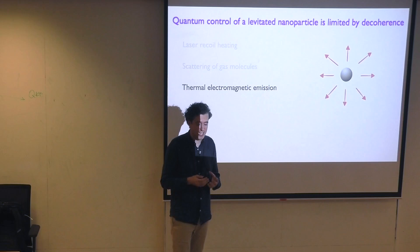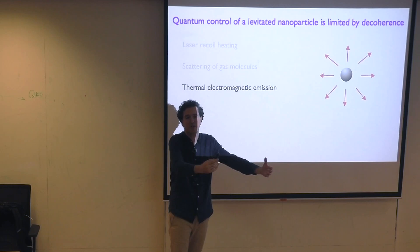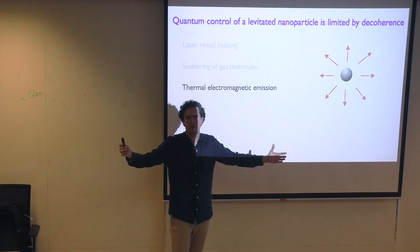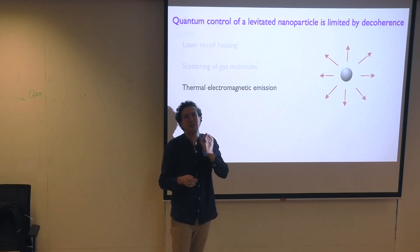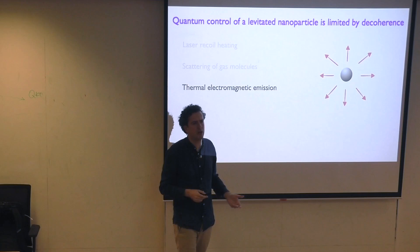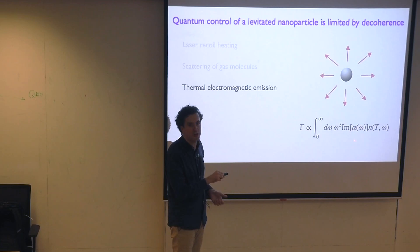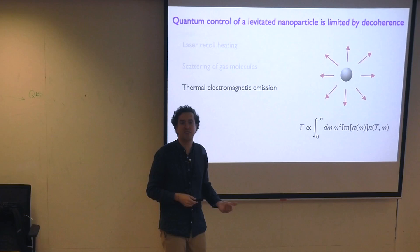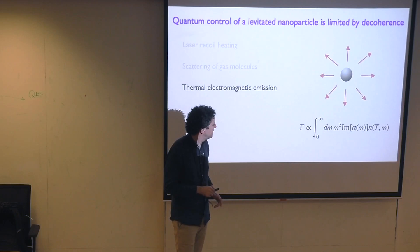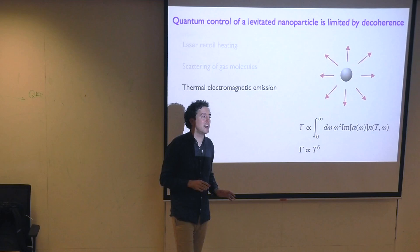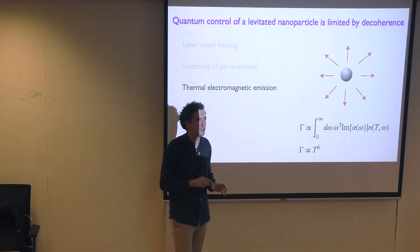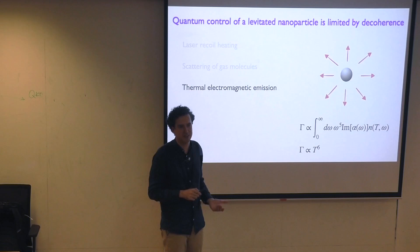Third: the center of mass is very cold but the object is hot, so it emits thermal radiation. The good thing is these photons are pretty long in wavelength — for silica around 10 micrometers — so each photon provides little information about the position. But it provides a decoherence rate you must account for. This thermal emission heating rate scales with the Bose-Einstein occupation with temperature and the imaginary part of the polarizability — specifically it goes as the sixth power of the internal temperature. So controlling the internal temperature is very important: increase it by a factor of 10 and you increase decoherence by six orders of magnitude.